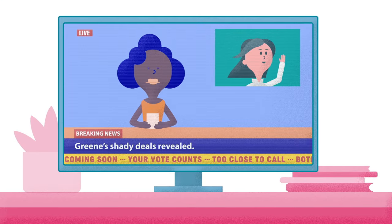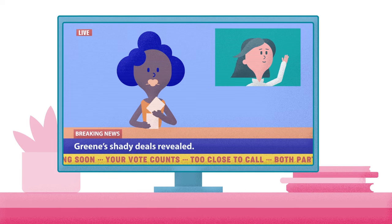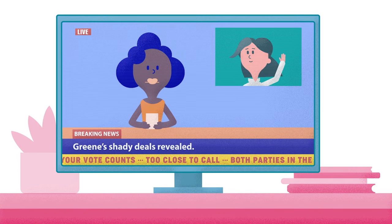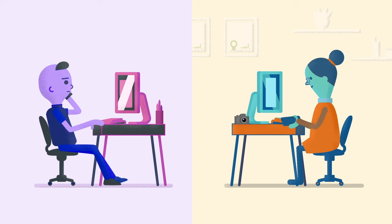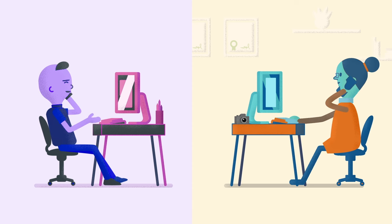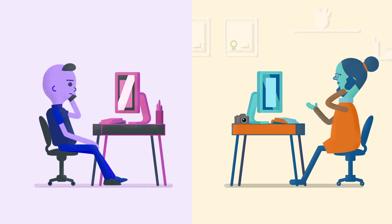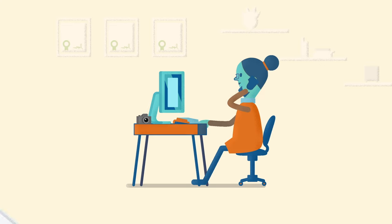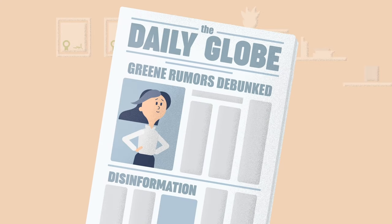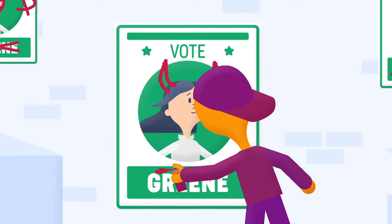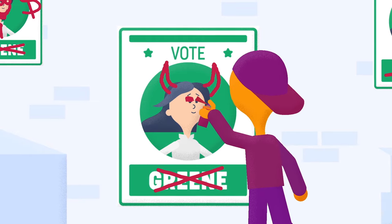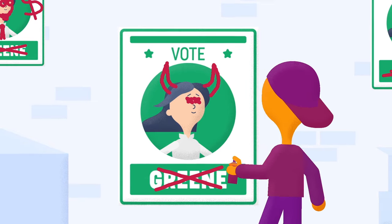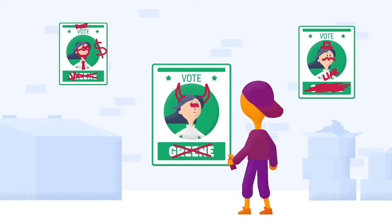Finally, media coverage would further spread your claims and give them perceived legitimacy. You could message a few local journalists asking whether these rumors are true and express your concerns. By the time an article comes out debunking the rumors, people's experiences of the truth will have become so warped that convincing them otherwise will be difficult.